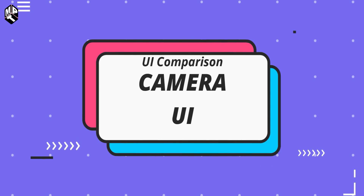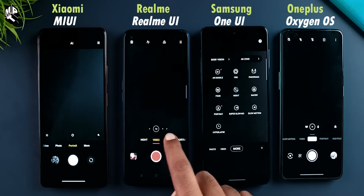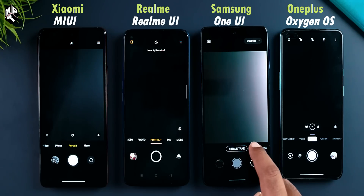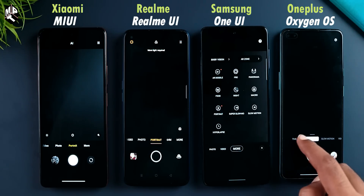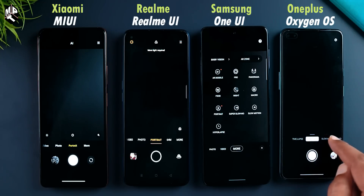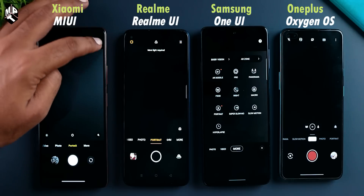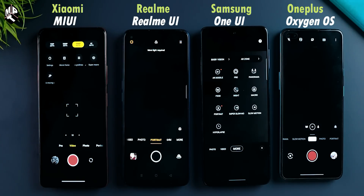We showed you 4 UIs and the camera UI, looking for an overall look. These 4 UIs are very helpful and interactive. There are modes like Pro, Video, Photo, and Portrait — almost the same setup. For example, MIUI is user-friendly. We are looking at the MIUI camera UI.